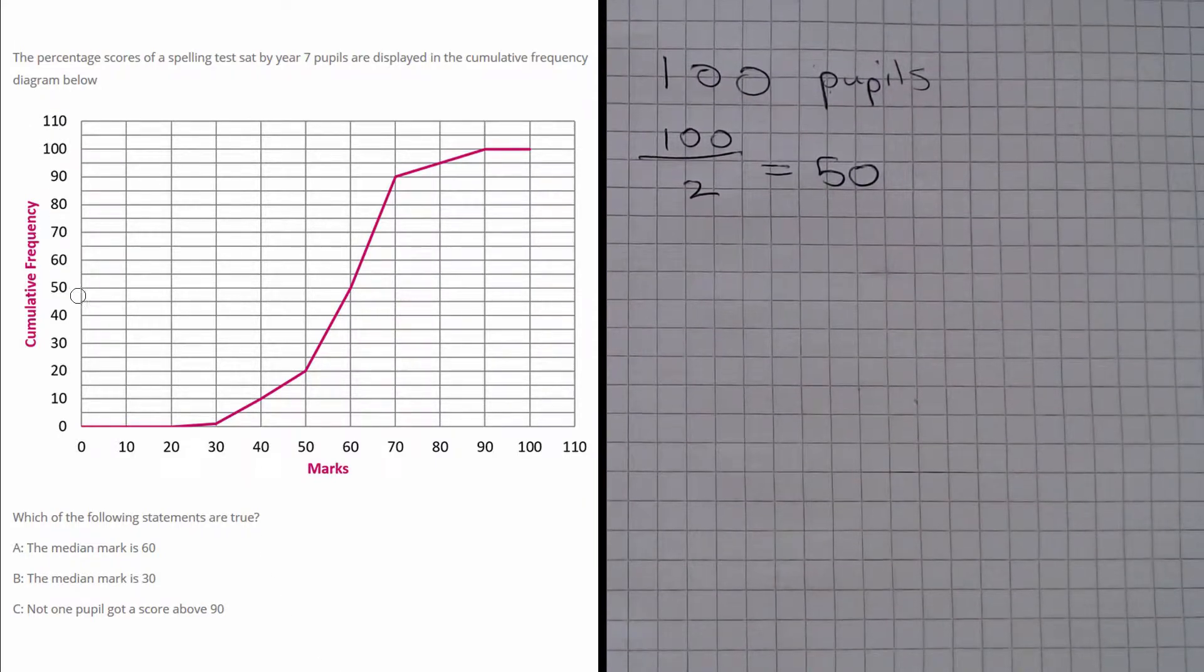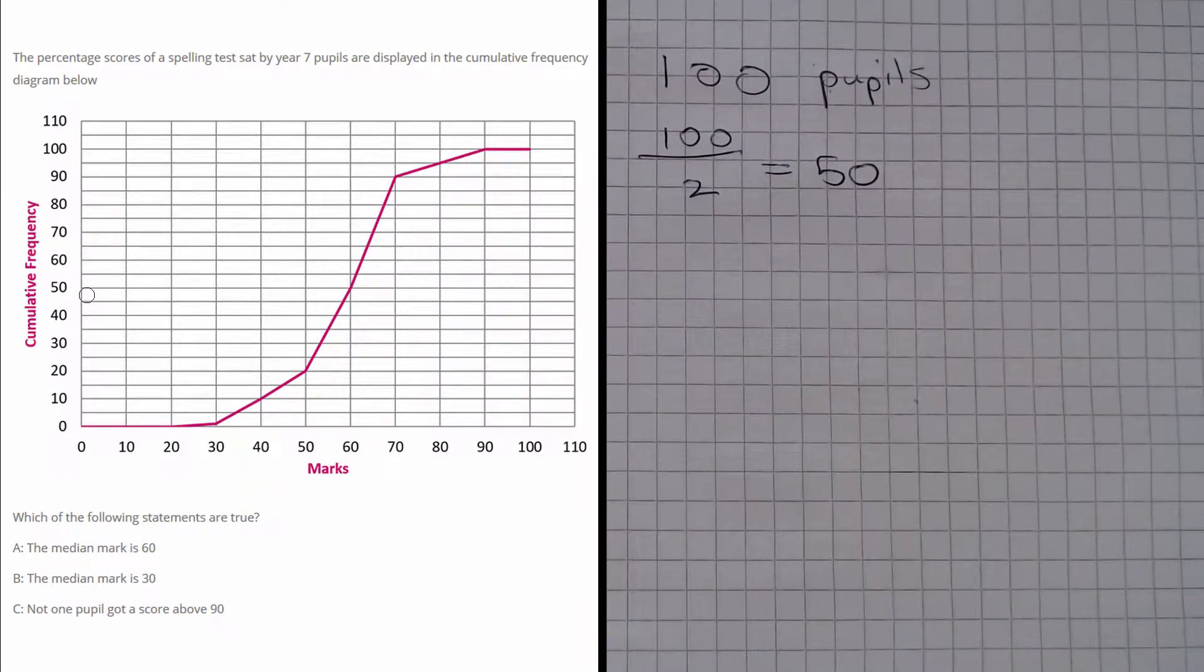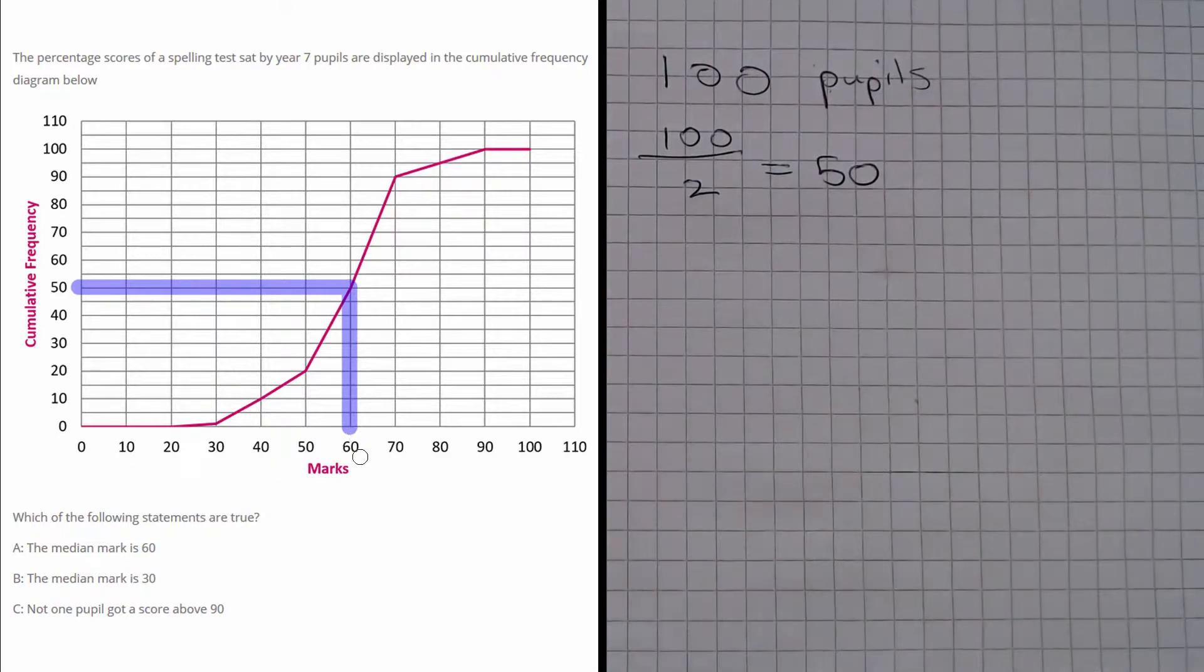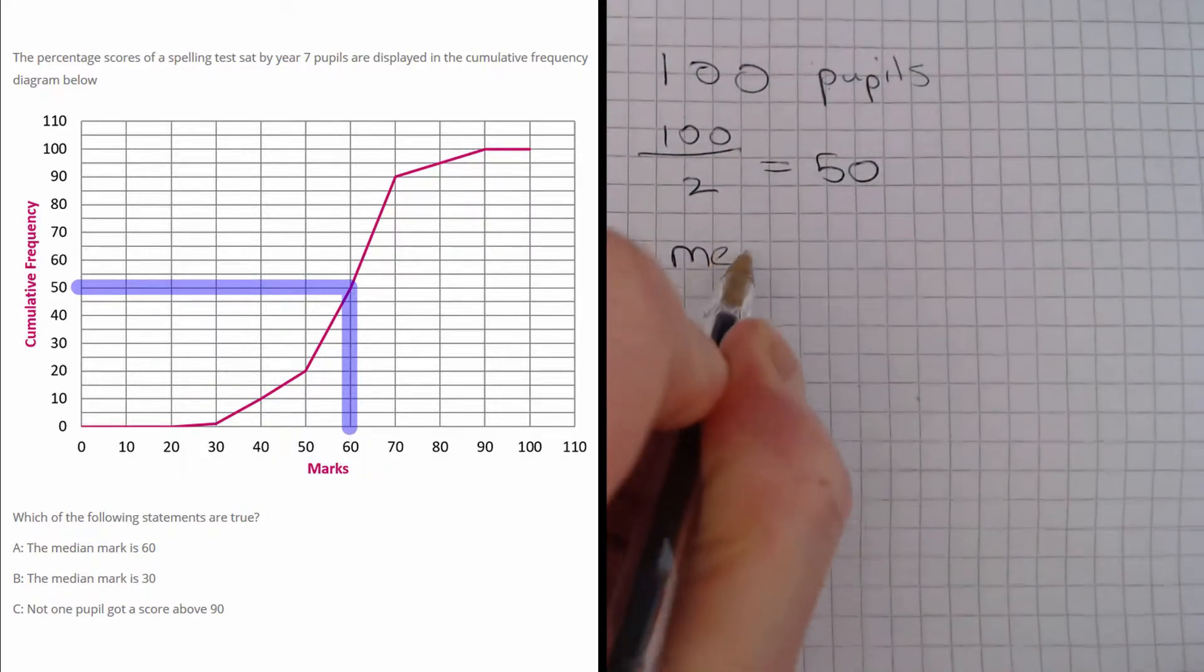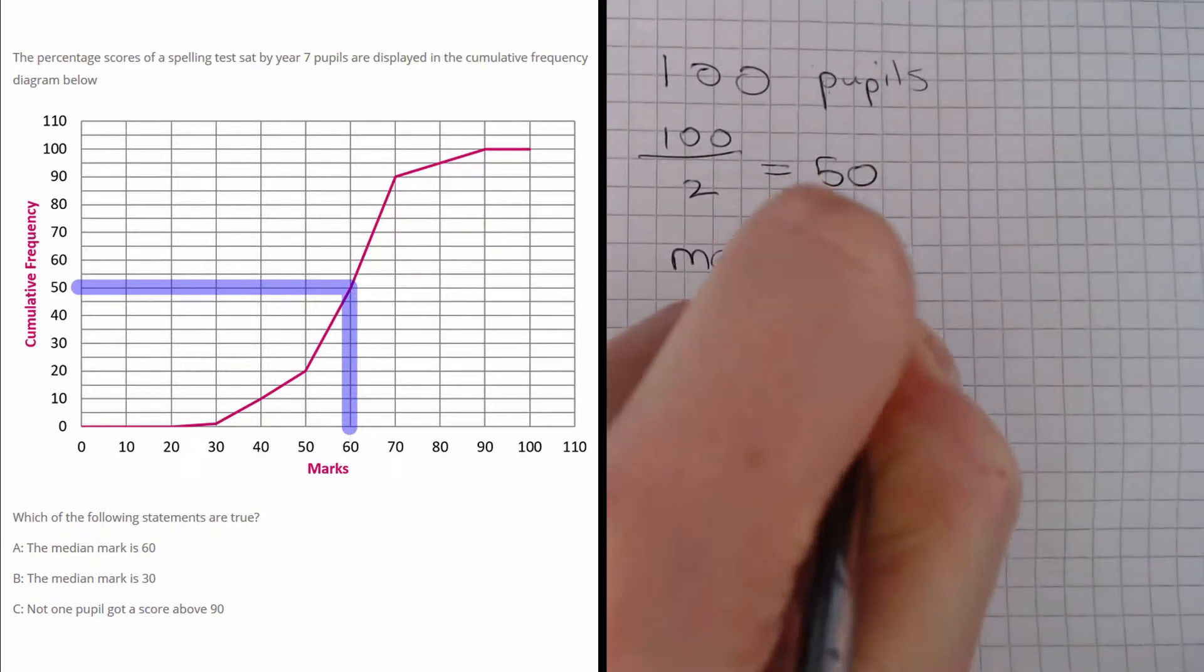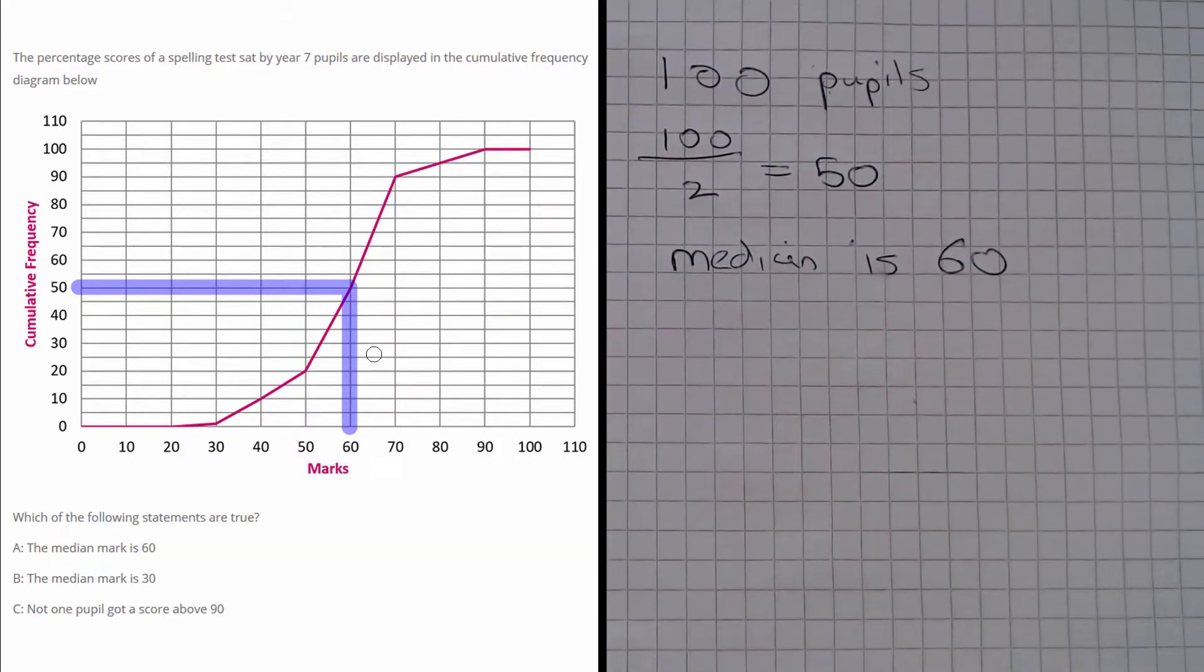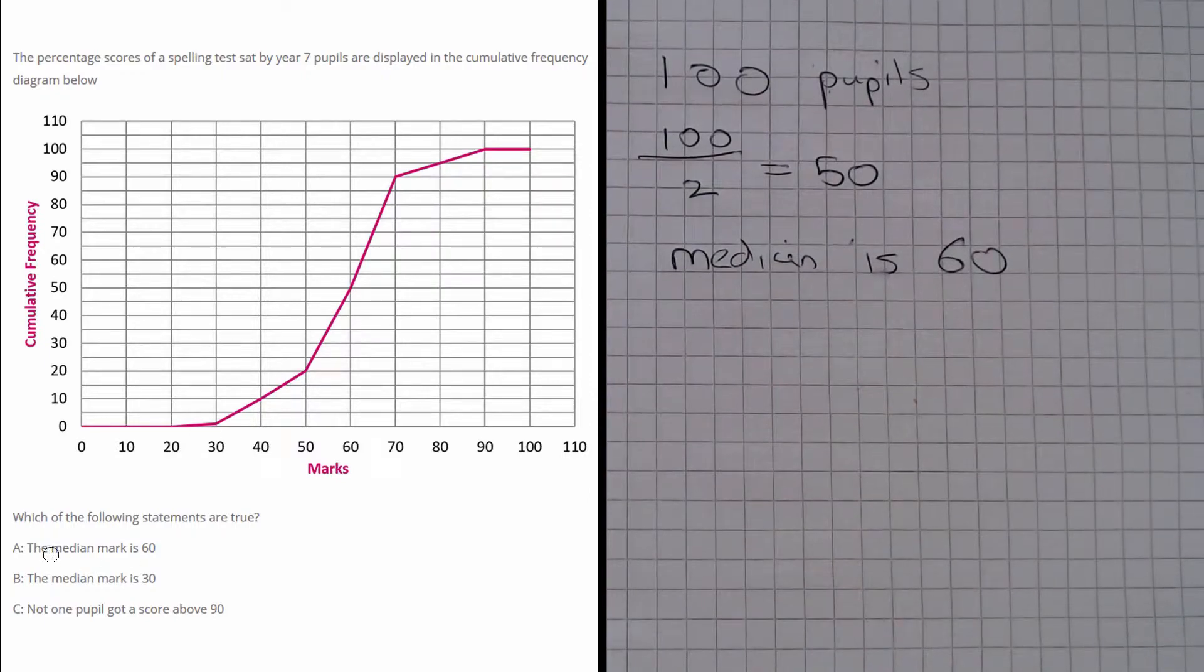And then what we do is we draw all the way across until we intersect the line. And we can see that we intersect the line here. And this point here represents a mark of 60. So we can tell already that the median is 60. And that means that part A is true.